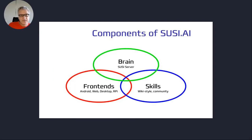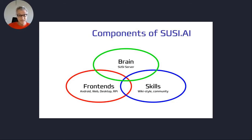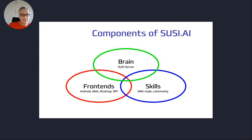Let's go to the components of SUSE AI. There are basically three parts: the brain — which is the SUSE server; the skills; and various front-ends that communicate both with the brain and the skills for all kinds of operating systems and devices. The skills can be developed in a wiki-style way using a wiki front-end for skill development, and there's a large community around them.